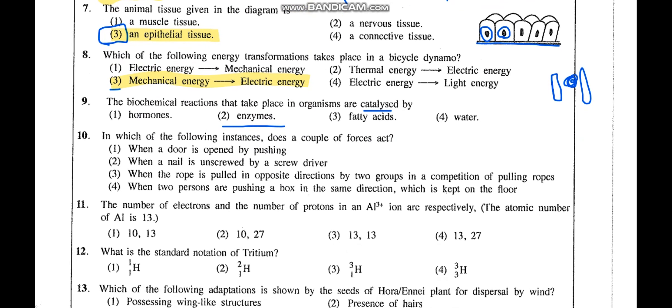Question 10: In which of the following instances is there a couple of forces? A couple of forces means you have a clockwise moment and an anti-clockwise moment acting together. When a door is opened by pushing, it is a moment but not a couple. When a rope is pulled in opposite directions by two groups — that won't come. When two persons push a box in the same direction — no couple. When a nail is unscrewed by a screwdriver — yes, that is a perfect textbook example. The answer is the second option.